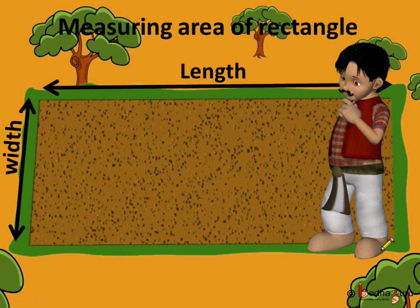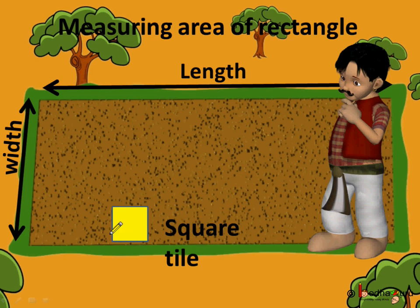Now, how to measure this land? He got an idea. He used the square tile to fill up the whole land and find out how many tiles were used to do so. So, let us use this square tile to find the area of this land.